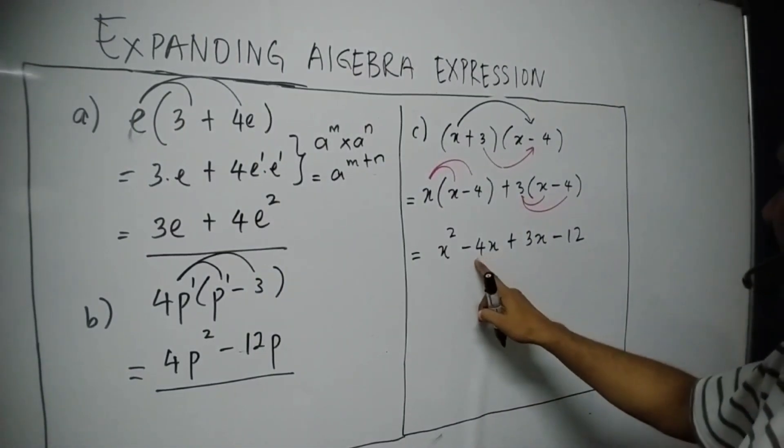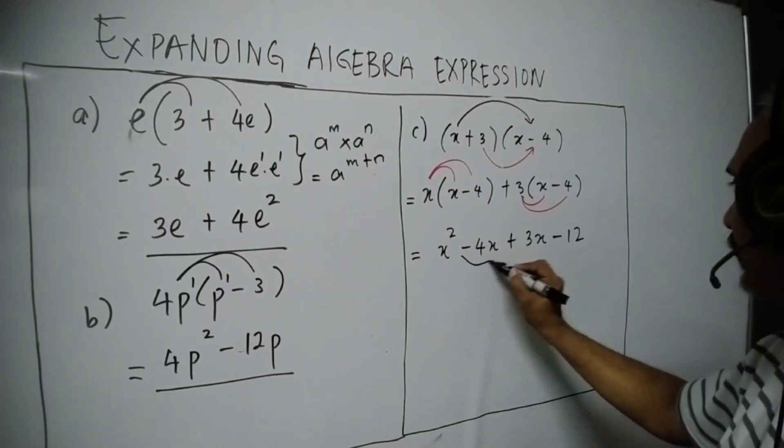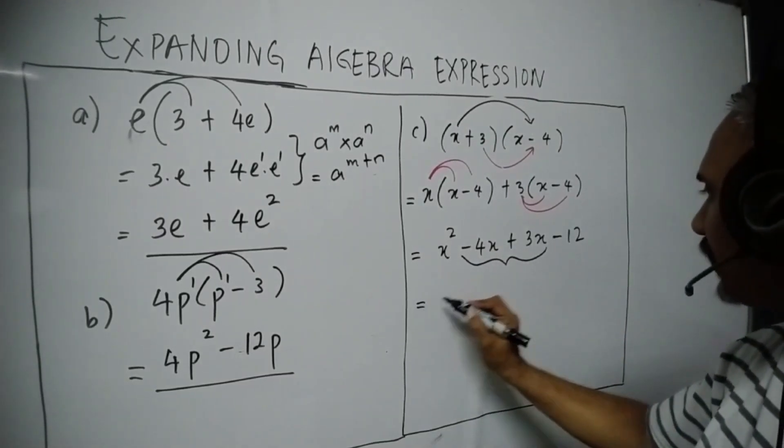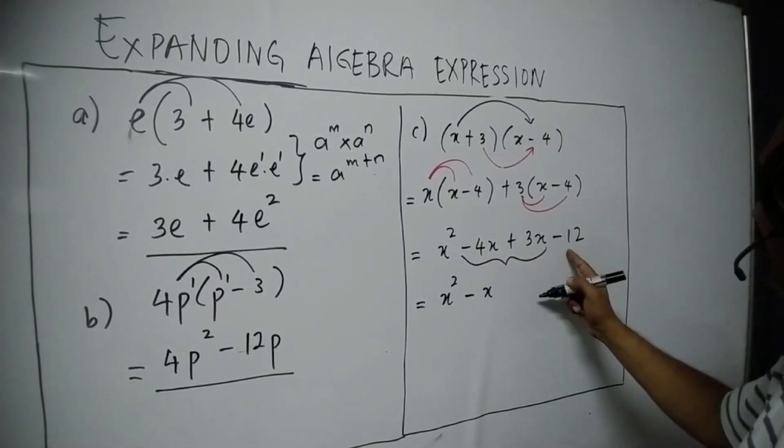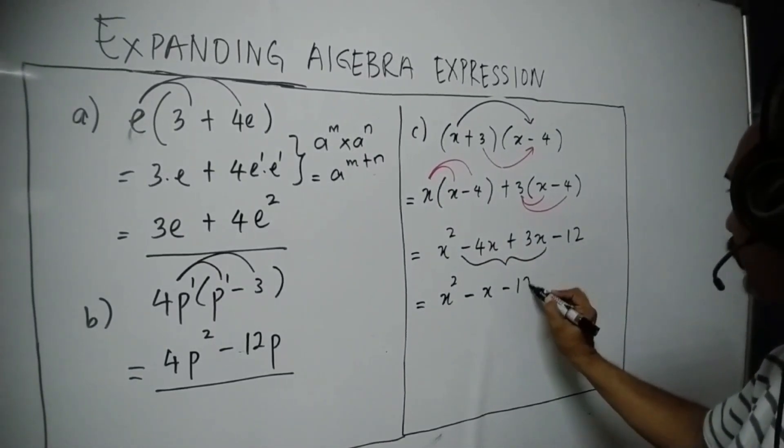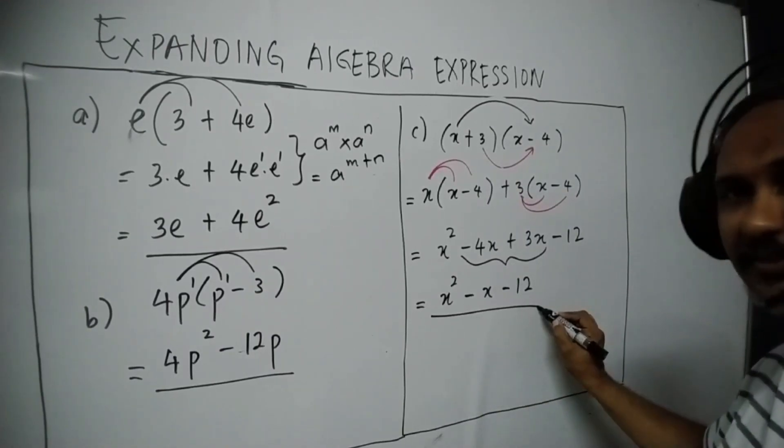So we have here negative 4 and plus 3 here, these are the same term. So it will become X squared. Negative 4 plus 3 is negative X. And we have the 12 falling from behind. Final answer.